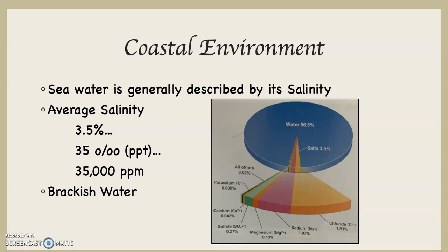There are places in the global ocean where salinity is consistently less than 3.5%. An area with salinity less than 35 parts per thousand is referred to as having brackish water. An area with brine water, as you might guess, has a salinity above 3.5%, or above 35 parts per thousand.